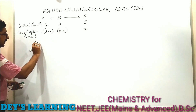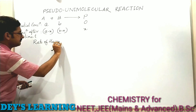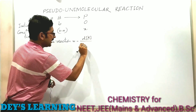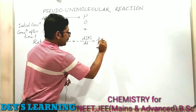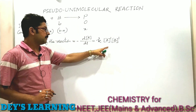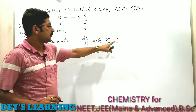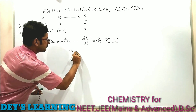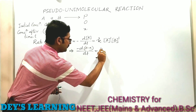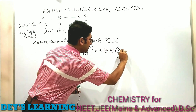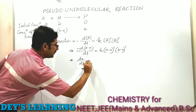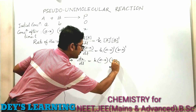The rate of the reaction is equal to minus d[A]/dt, which equals the rate constant K times [A]^1 times [B]^1, since it is second order — first order with respect to A and first order with respect to B. Substituting concentrations: dx/dt equals K times (A minus x) times (B minus x).